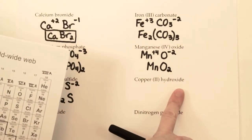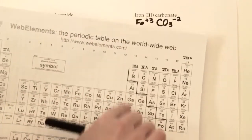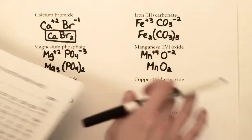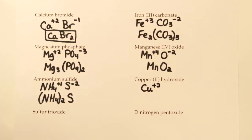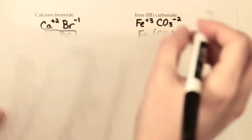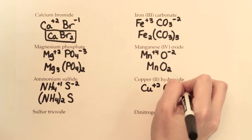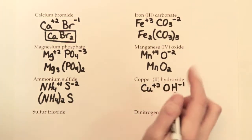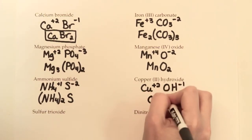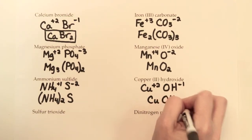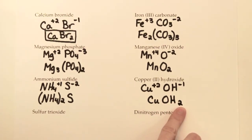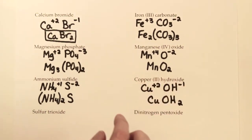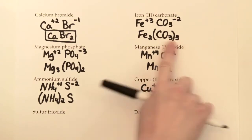For copper(II) hydroxide: copper is a transition metal, so the Roman numeral II tells you the charge is +2. Hydroxide is found on the charge sheet — it's OH with a −1 charge. To balance +2 and −1, we need two hydroxide ions. A common mistake is writing CuOH₂, which implies one oxygen and two hydrogens. The correct formula puts hydroxide in parentheses: Cu(OH)₂.